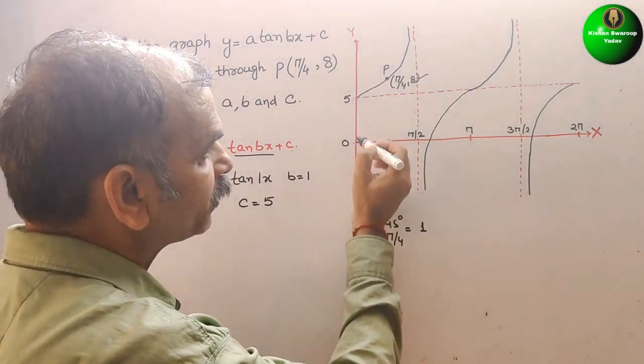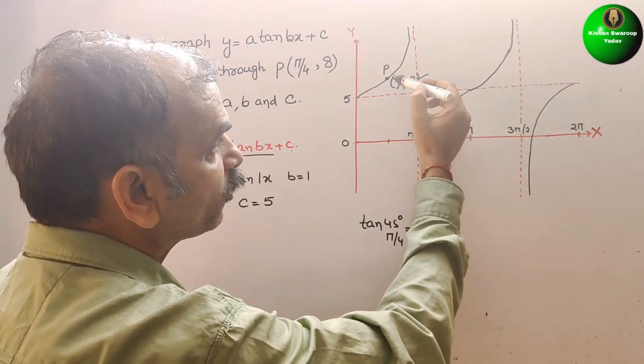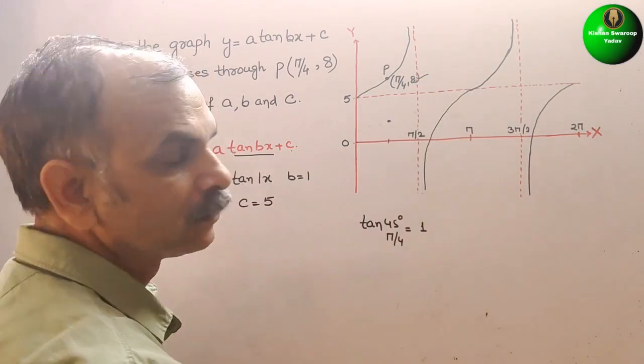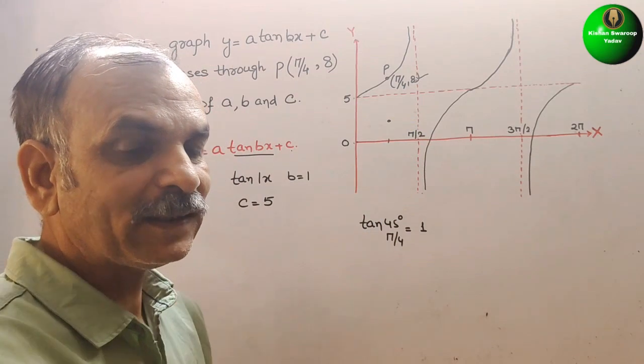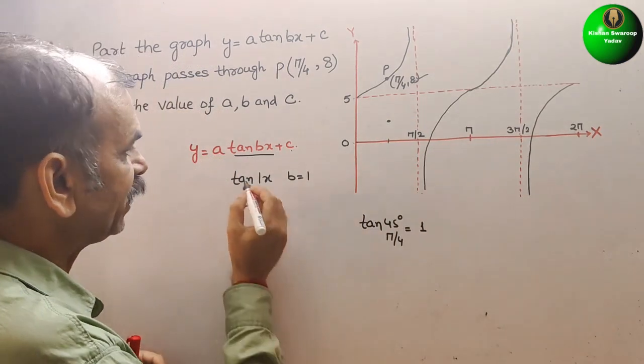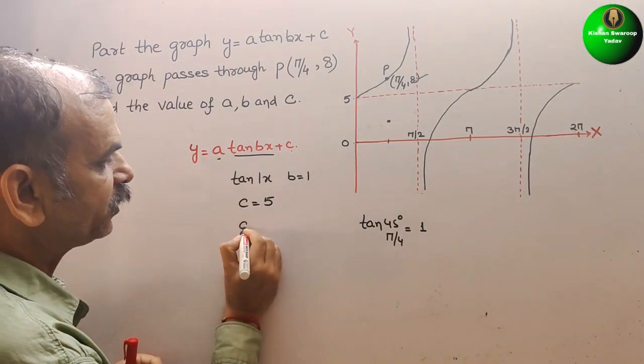Now this 5 will come here. So therefore, 8 will come to 3. Therefore, the amplification of tan is 3 times. So we can say here a is 3.